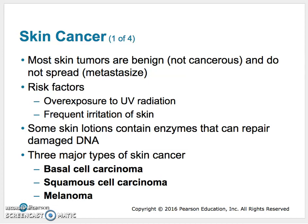We get bumps in our skin throughout our life, and the majority of them are benign. They're not going to cause us any trouble. Sometimes they need to be removed, but that's mostly cosmetic. But other times, we get bumps that spread throughout layers, spread throughout tissues, and that is what we call skin cancer. The risk factors in getting skin cancer are from sun exposure, and actually, if you have frequent skin irritation, you are at a higher risk of getting skin cancer.